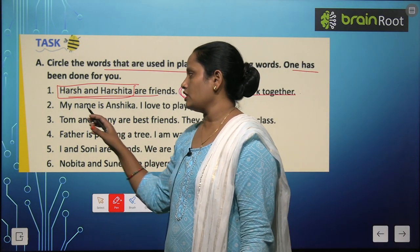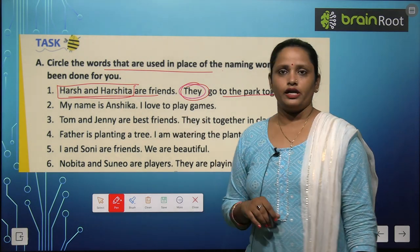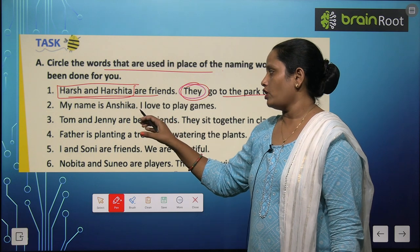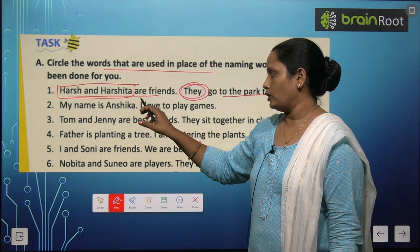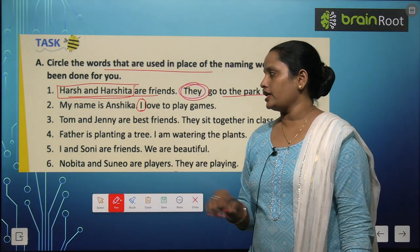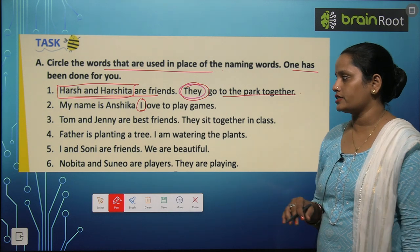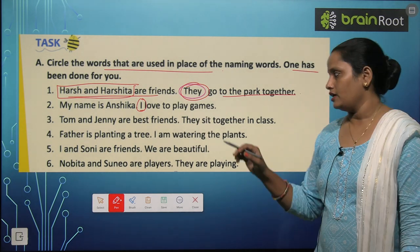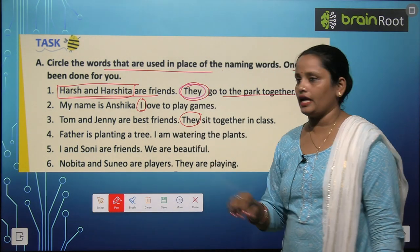Second one: My name is Anshika. I love to play video games. So the word here is I — we will circle I. Tom and Jenny are best friends. Tom and Jenny ke liye hum kya use karenge? They.